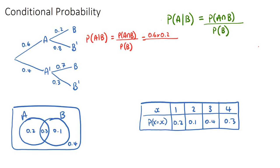We then need to divide by the probability of event B happening. In tree diagram questions, this is the tricky bit, because event B can happen two ways: we could have gone A and then B, or not A and then B. So to find the probability of B — our denominator — we use our rules of probability: it's A and B, so 0.6 times 0.2, plus not A and B, which is 0.4 times 0.7. You can type these into your calculator to get the probability. The intersection as the numerator is easy to calculate, but the denominator may be the sum of two probabilities.